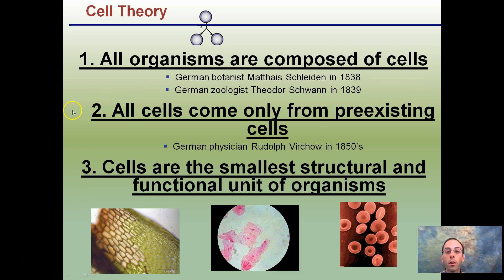Number two, all cells come from pre-existing cells. This is 1850s. So all cells come from pre-existing cells. In order to get a cell it had to come from another cell. They have that division process that occurs.